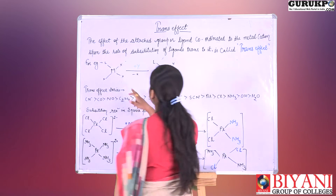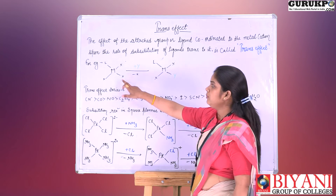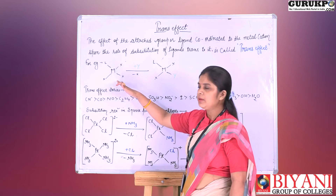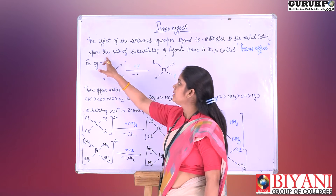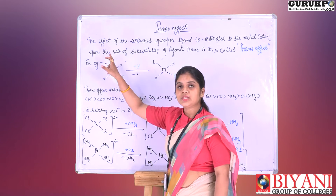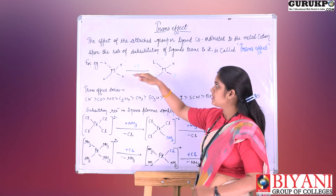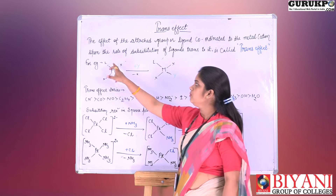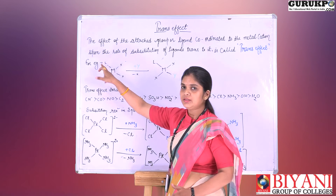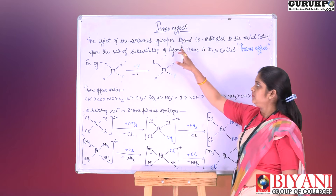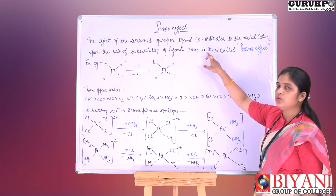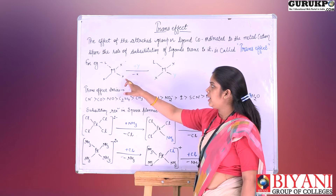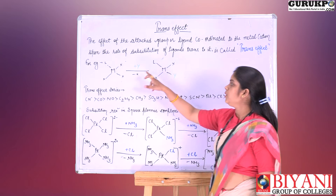For example, here we have a square planar complex. When we think about where a ligand Y is attached to this square planar complex, we assume that L is the spectator ligand. The spectator ligand describes where Y is attached. According to the definition, substitution occurs for the ligand trans to L, so Y is attached trans to the spectator ligand L.